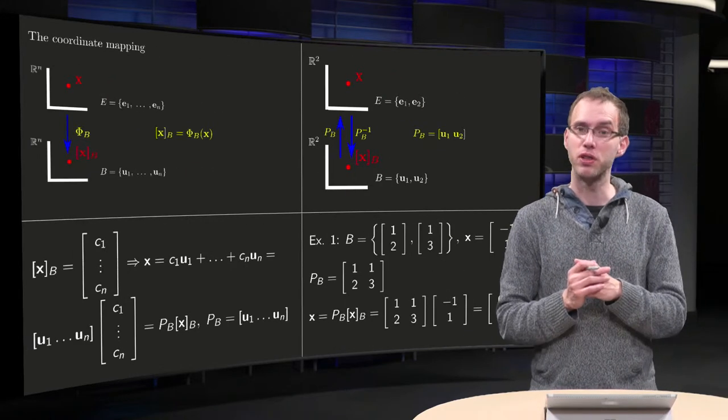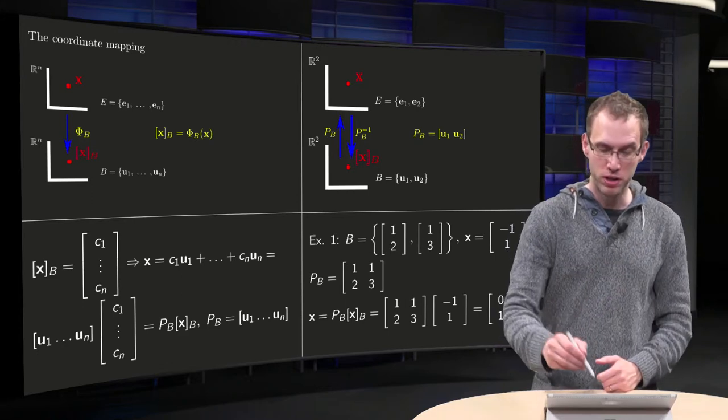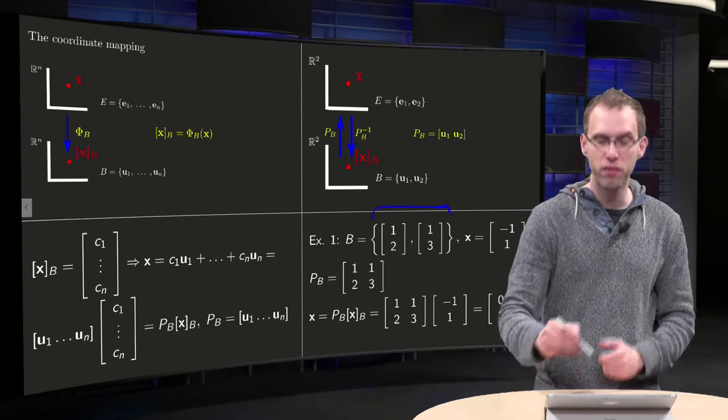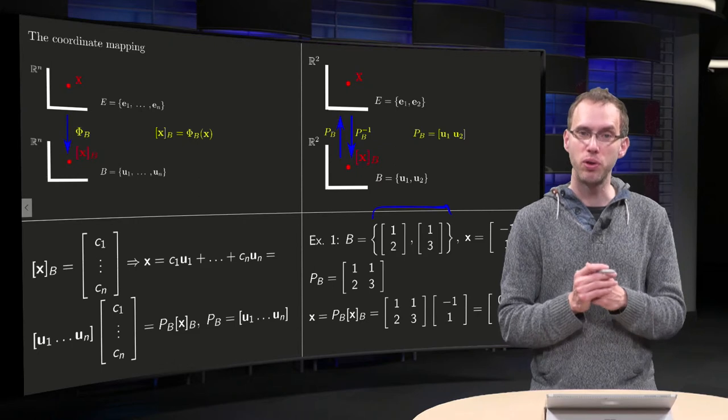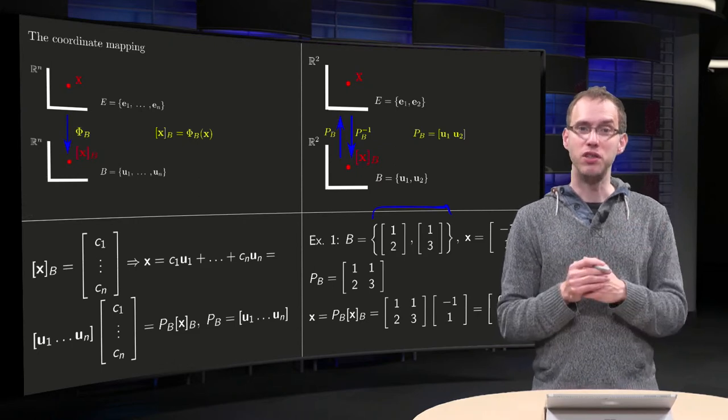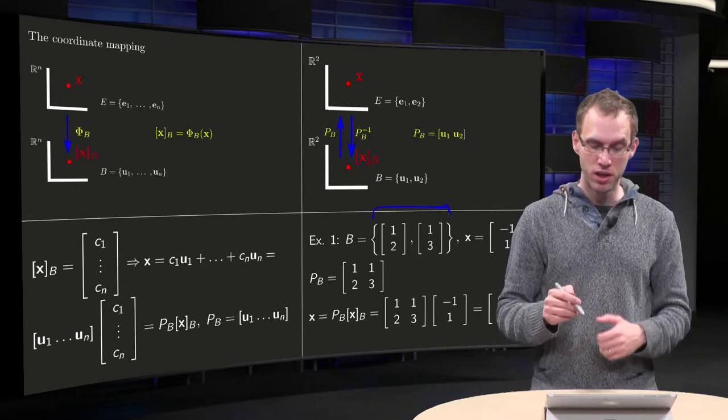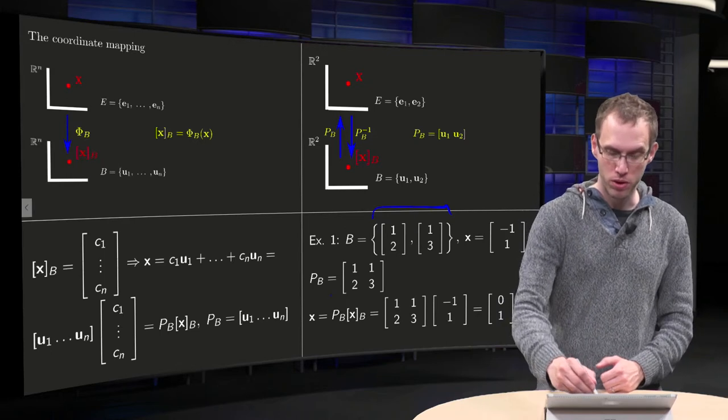So an example that works as follows. Suppose our basis B is given over here consisting of the vectors 1, 2 and 1, 3. Then it is easy to find our matrix Pb, which is just the matrix with 1, 2 and 1, 3 in it.